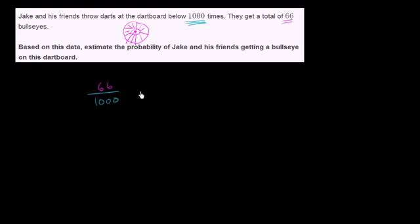Or another way of writing this, this is the same thing as 66 thousandths. So you could write this as 0.00, actually no, 066. This right over here is 6 thousandths. This is 6 hundredths. Or this could be viewed as 66 thousandths.